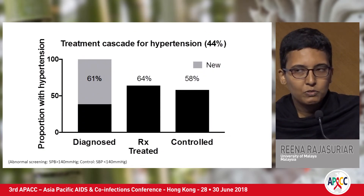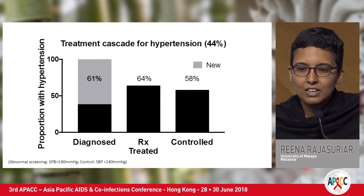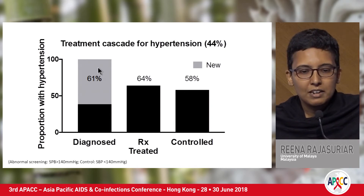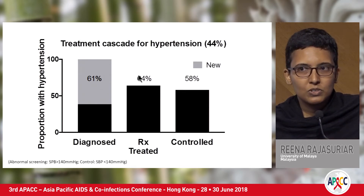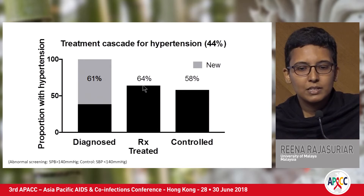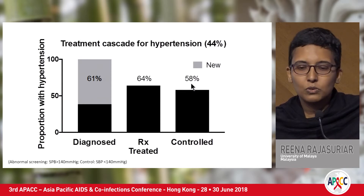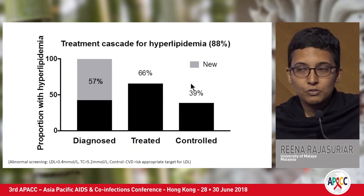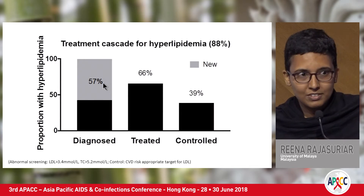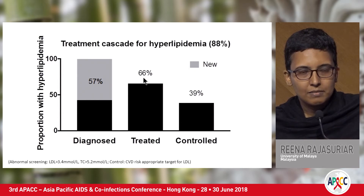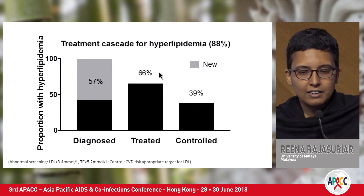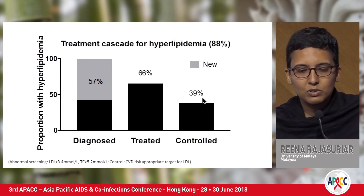For hypertension, 44% of patients were diagnosed but we had missed 61% of patients. At 18 months, 64% of those diagnosed were put on treatment and 58% had achieved control. For hyperlipidemia, we had missed 57% — picked up from the study. Following 18 months, 66% of those diagnosed were on treatment, but only 39% were controlled.